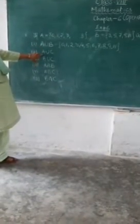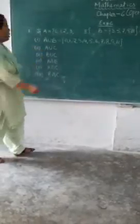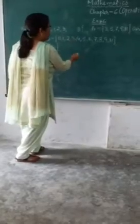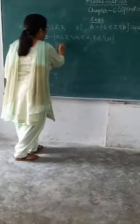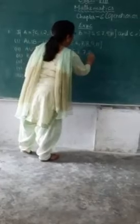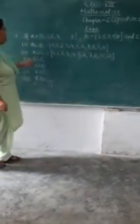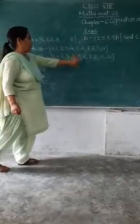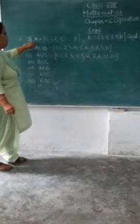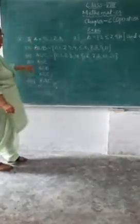Now we find A union C. In A we have numbers from 0 to 8, so we take all those numbers: 0, 1, 2, 3, 4, 5, 6, 7, 8. Then 10 and 20 are the remaining elements in C, so A union C equals 0, 1, 2, 3, 4, 5, 6, 7, 8 and 20. Now for B union C: B is 3, 5, 7, 9, 11 and C is 0, 5, 10, 20. So B union C equals 0, 3, 5, 7, 9, 10, 11 and 20.